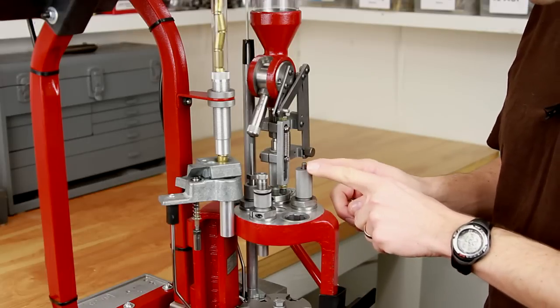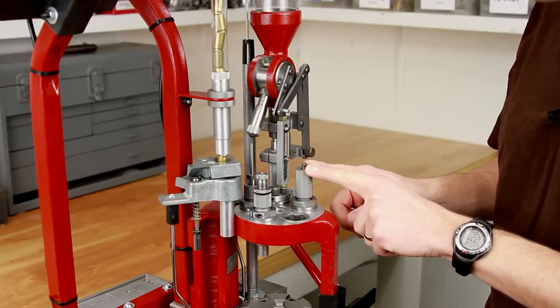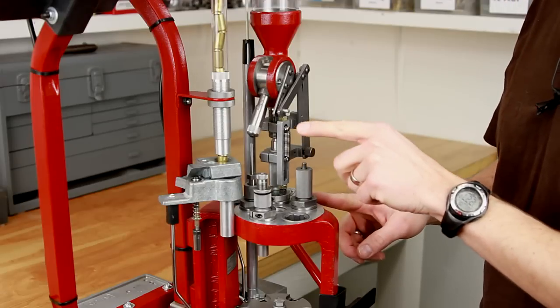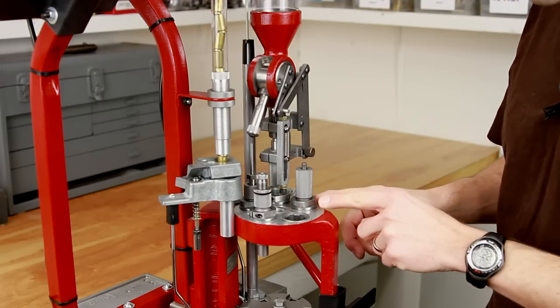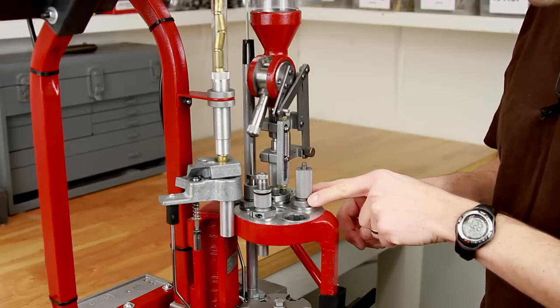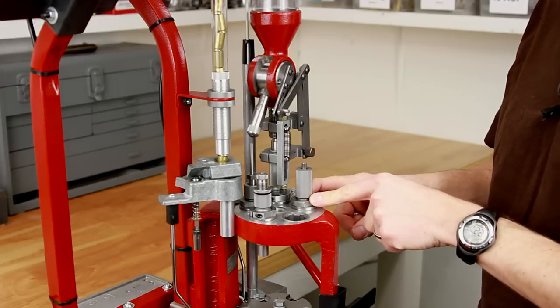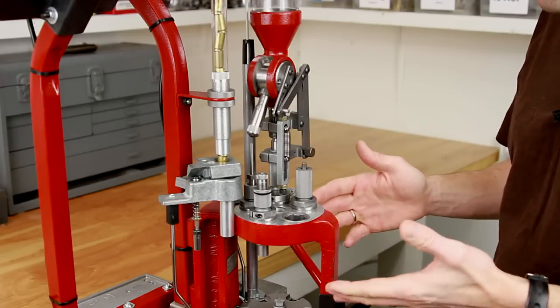I've also already set up the Hornady powder cop die. Now this is my preferred die placement because we're seating and crimping in station number five and that leaves station number three open for powder check, which with the bullet feeder is an important consideration because you're going so fast.